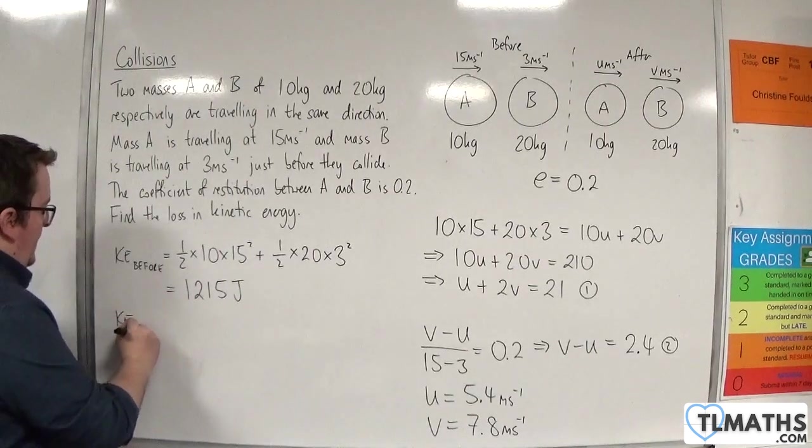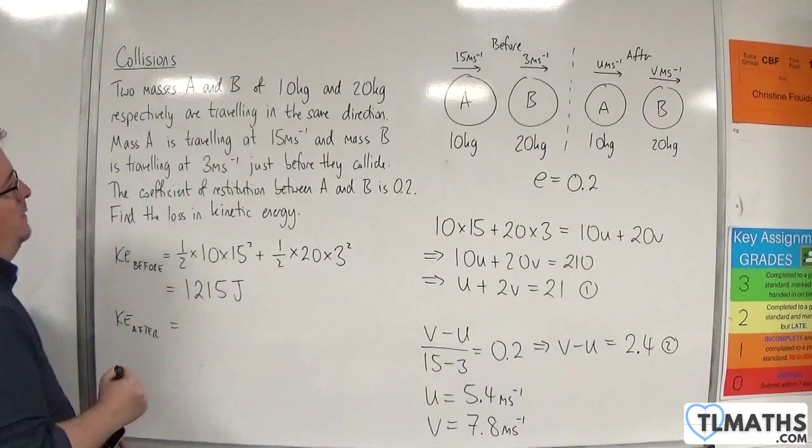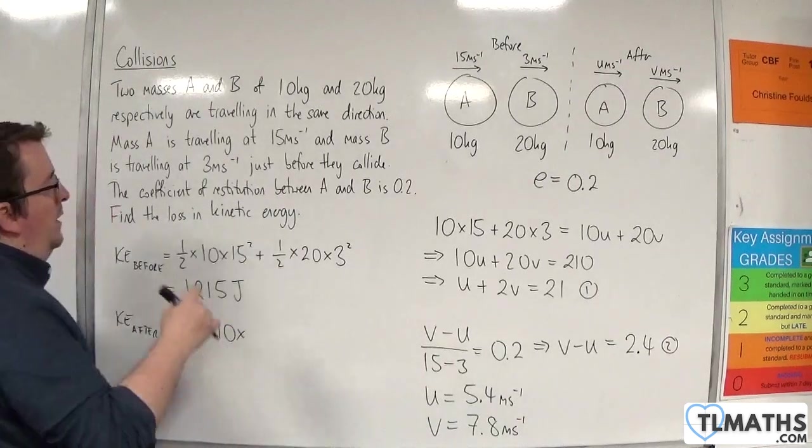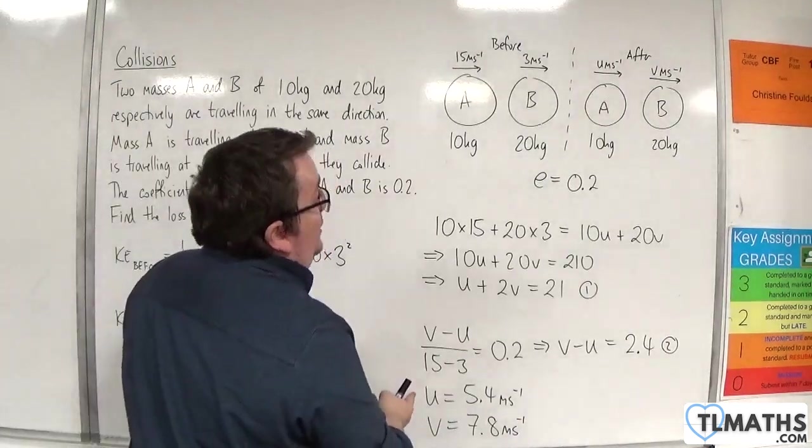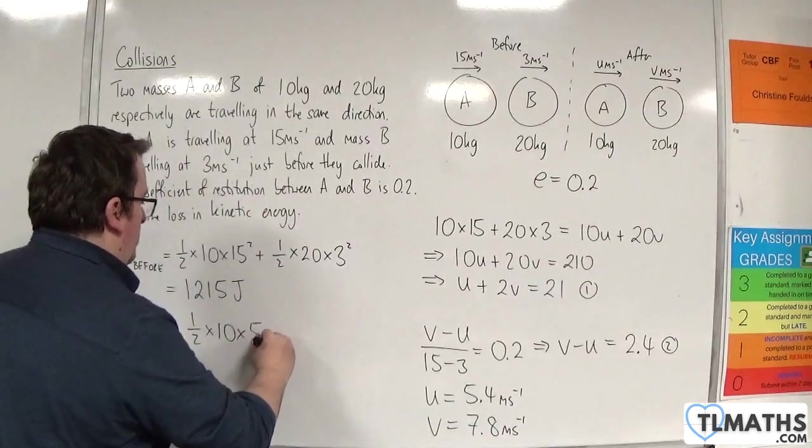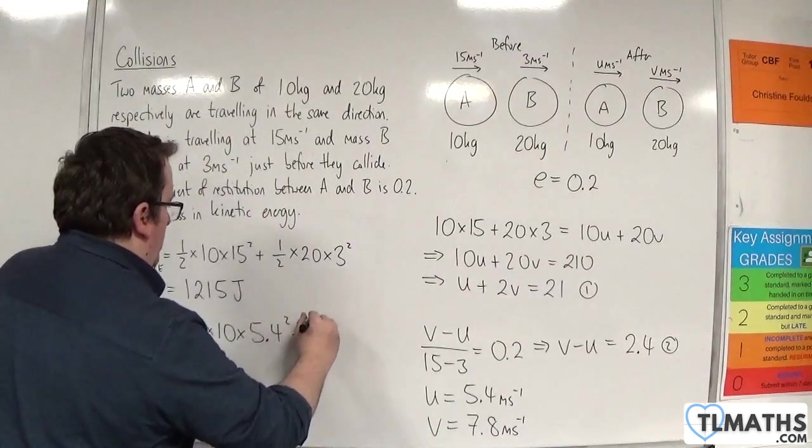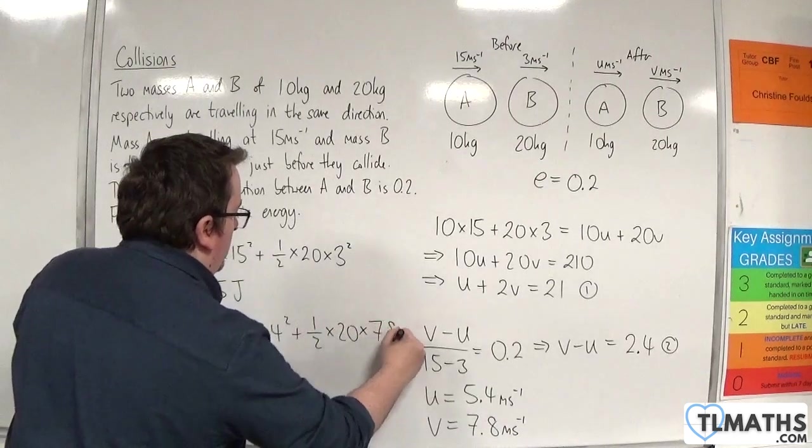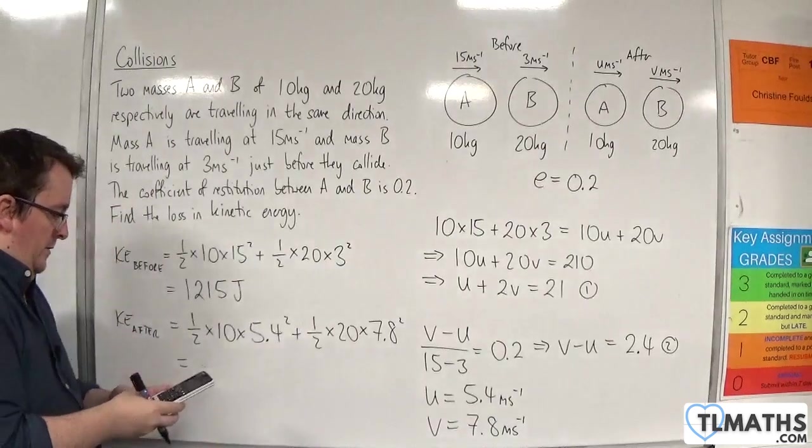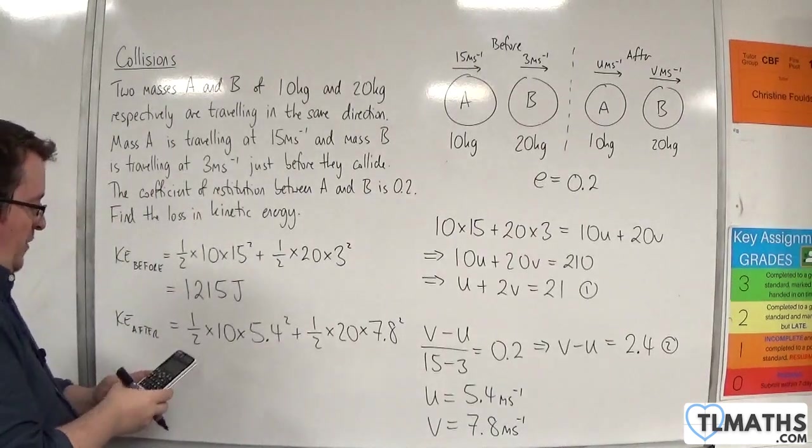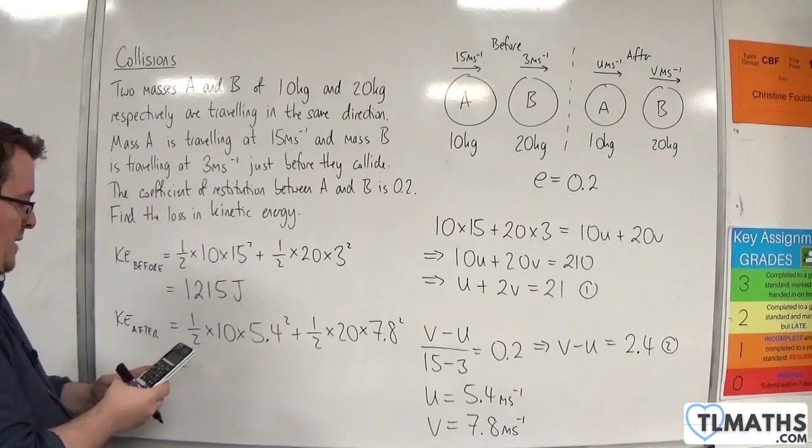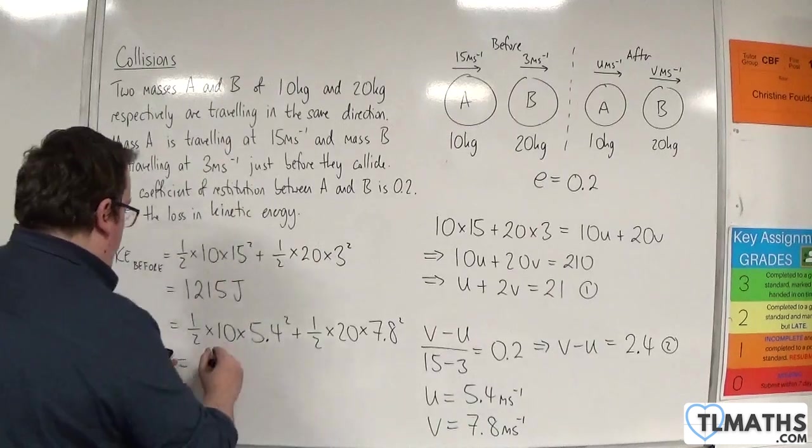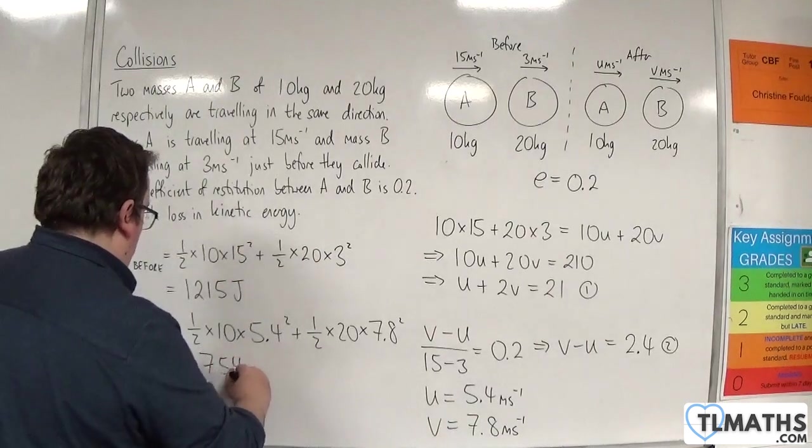Now the kinetic energy afterwards will be equal to 0.5 times M times V squared. So in this case U squared, which is the 5.4 squared, plus 0.5 times M times 7.8 squared. So 0.5 times 10 times 5.4 squared, plus 0.5 times 20 times 7.8 squared. And we get 754.2 joules.